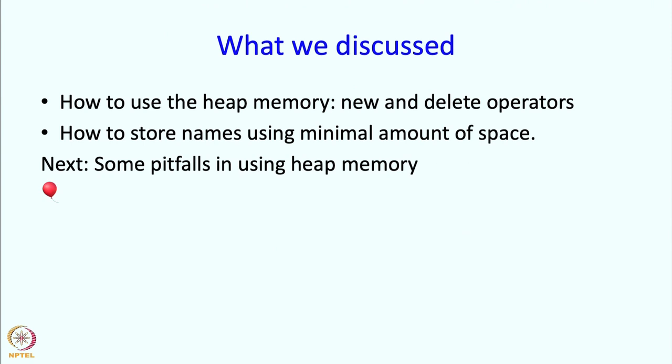So what have we discussed in this segment? We talked about how to use the heap memory — in particular the new and delete operators. Then we talked about a solution to the problem of storing names, and showed that using new and delete we can store all the names in a reasonably small amount of space and access them quite easily. Now it turns out that while this solution is acceptable, it is actually quite tricky to use new and delete. We need to have some policy for using them because there are some pitfalls, and in the next lecture we are going to talk about those pitfalls.